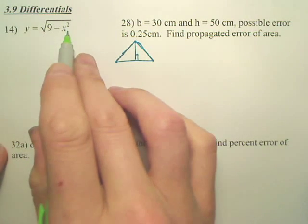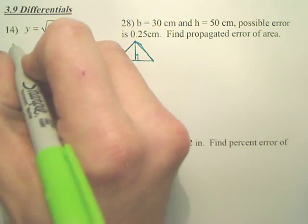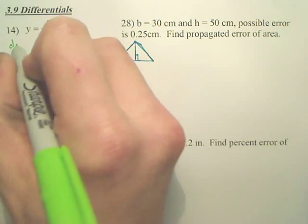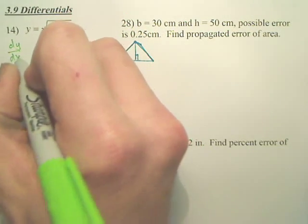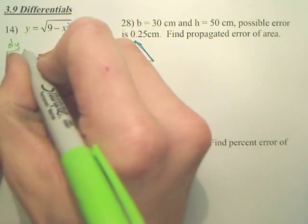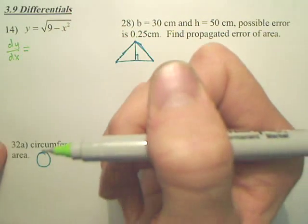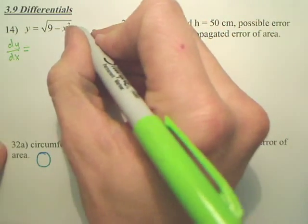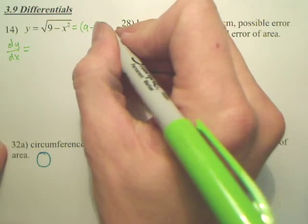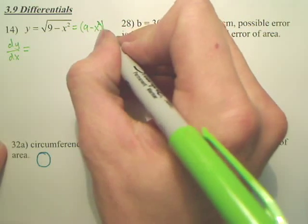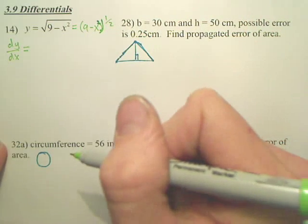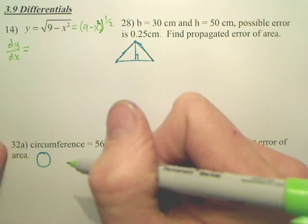We are going to find the differential of this. So basically, we're going to find the derivative. I'm going to write dy dx instead of y prime. So dy dx, I'm going to rewrite this one as 9 minus x squared to the 1 half. It's easier to derive it then.